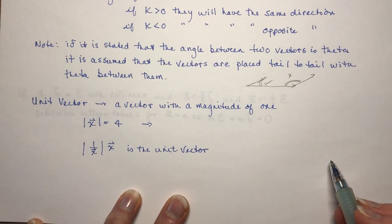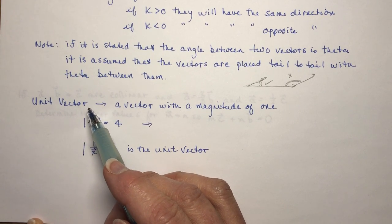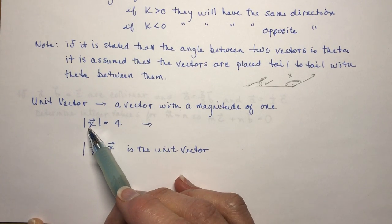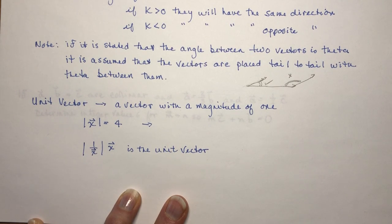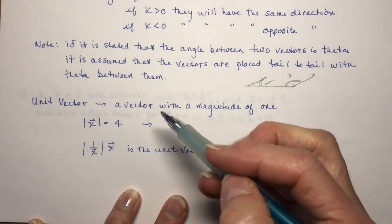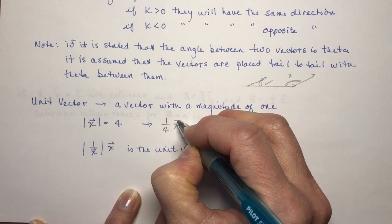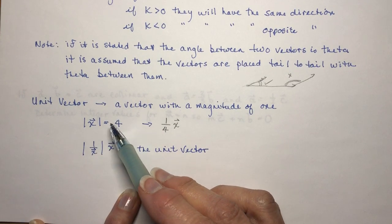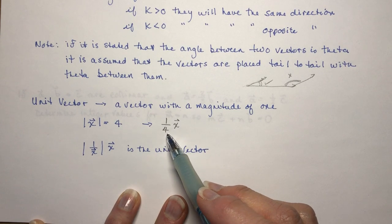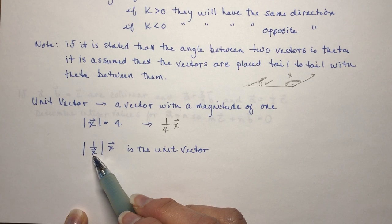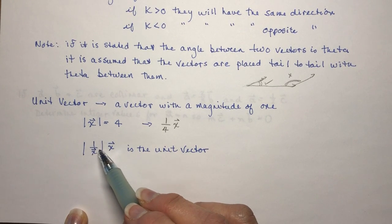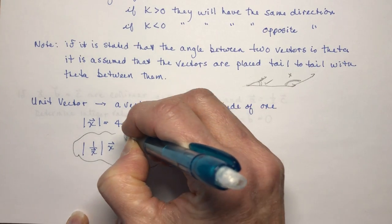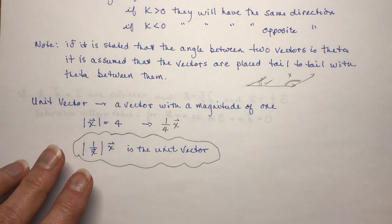What is a unit vector? You'll see lots of this later. A unit vector is a vector with a magnitude of 1. So if the magnitude of vector X is 4 and you want the unit vector, it would be one-fourth of the vector — making the magnitude 1. In general terms, it's 1 over the magnitude of vector X times vector X. You will find unit vectors several times in this course.